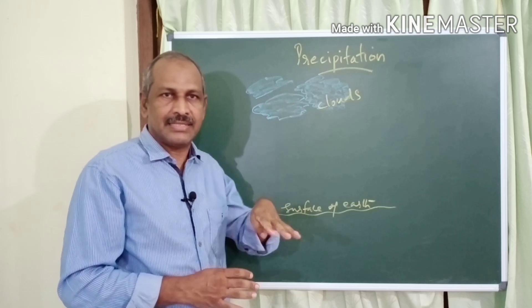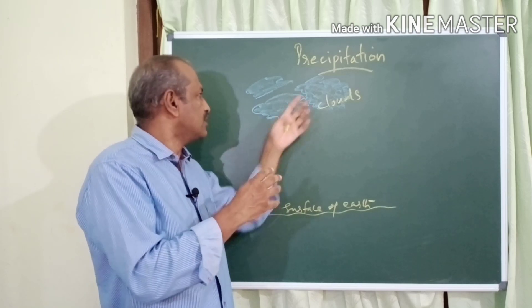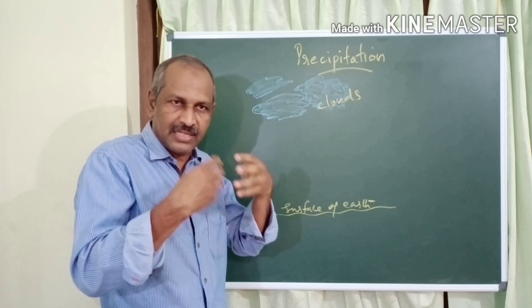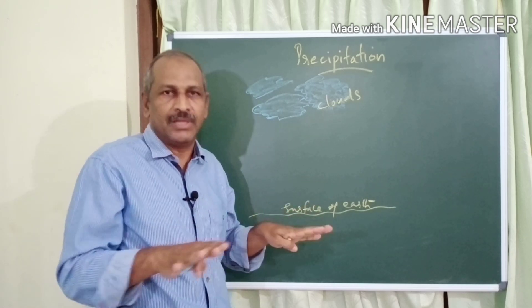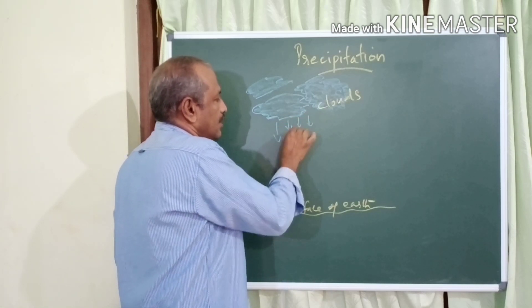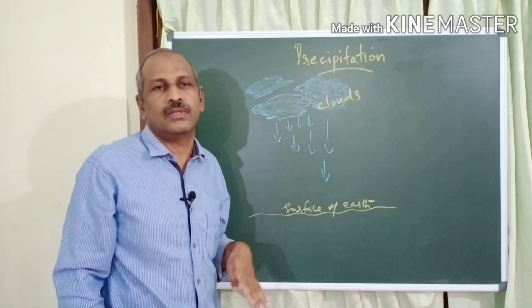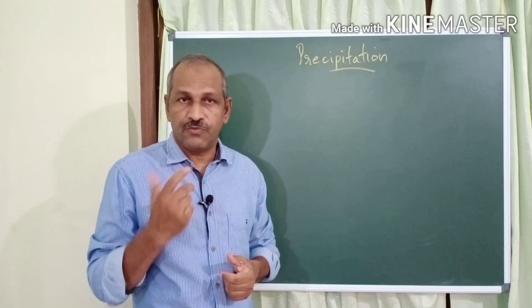Not able to resist the gravitational force exerted by the earth, the water droplets from the cloud get released and fall on the earth's surface. This is because condensation continues to increase their size, and gravity pulls them down. This process is called precipitation — in a nutshell, it is the amount of rain or snow falling from the sky to the earth.